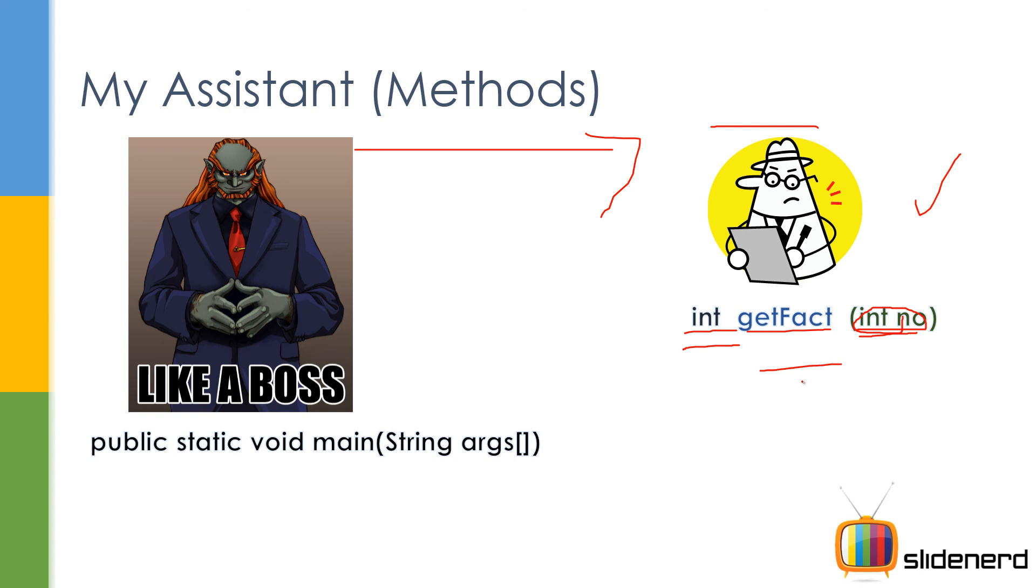The assistant is going to do some stuff over here. And ultimately, he's going to calculate the factorial and give it back over here. This is how methods work in Java.